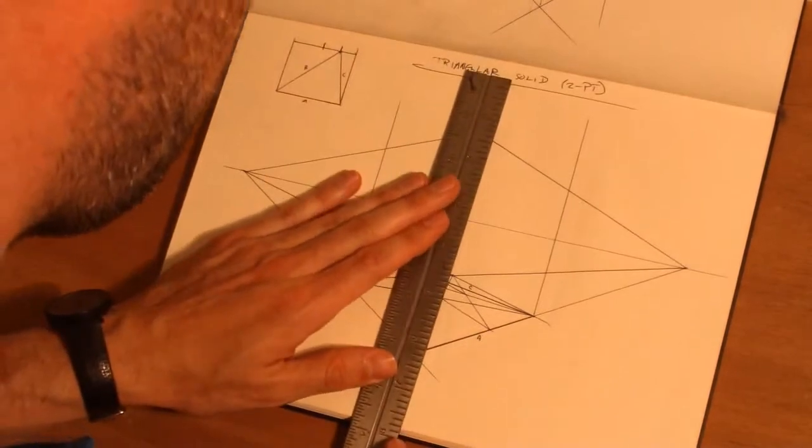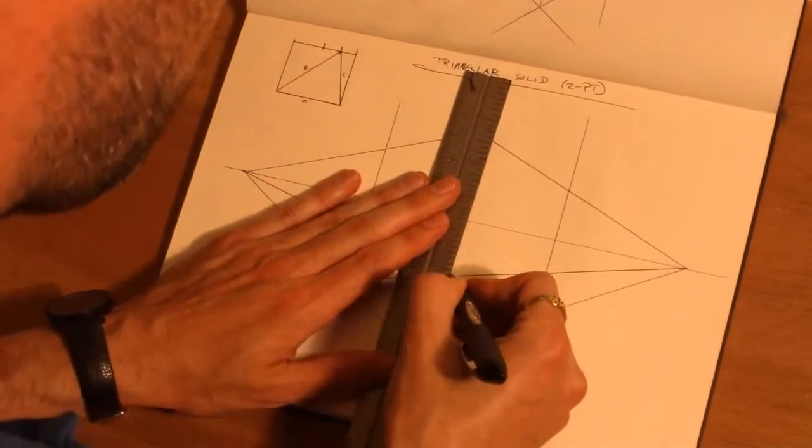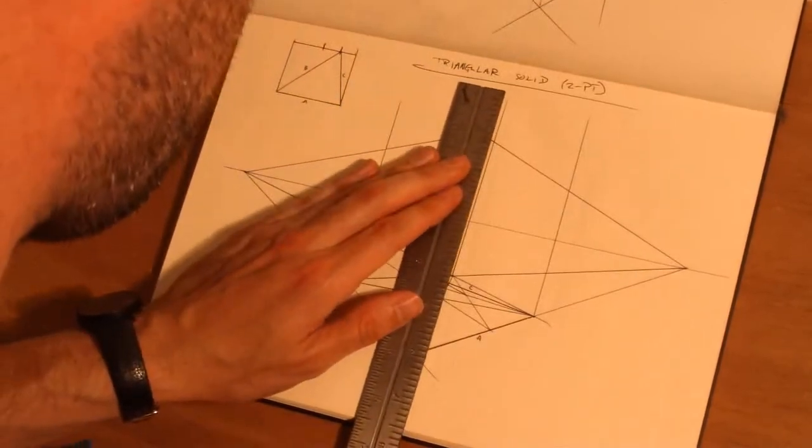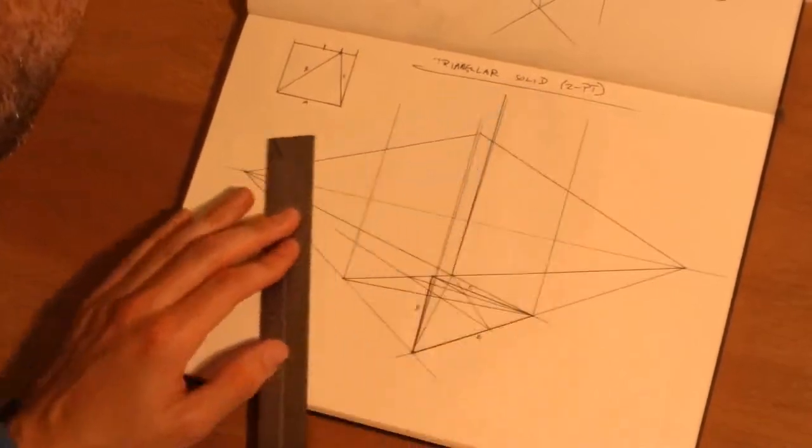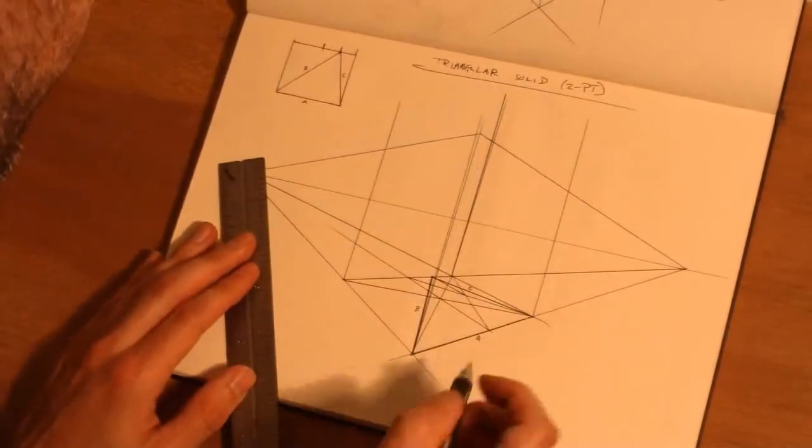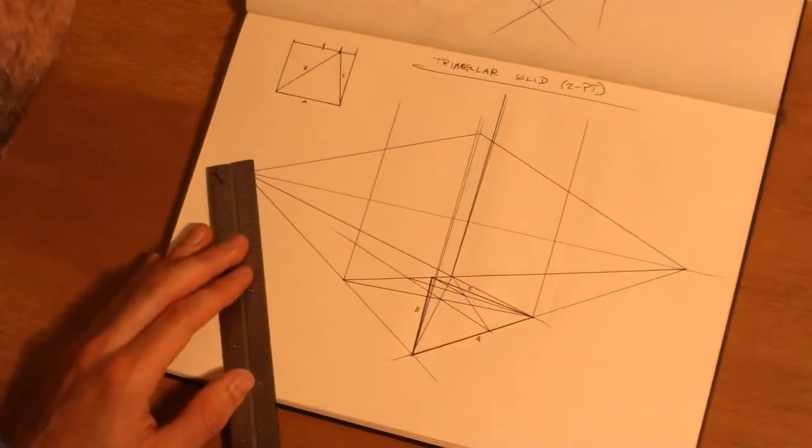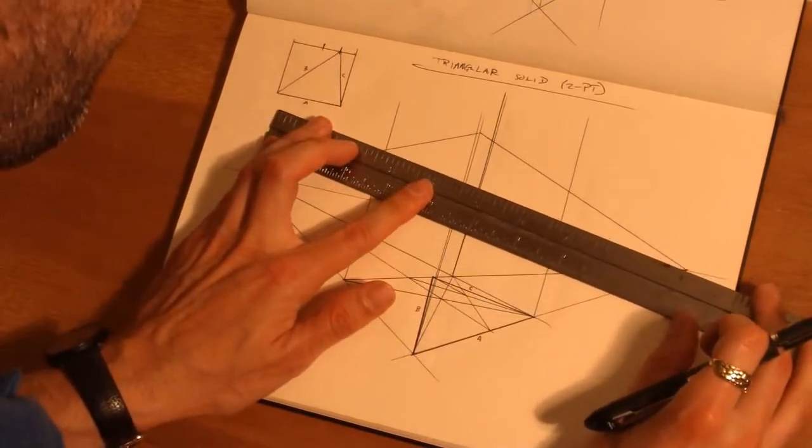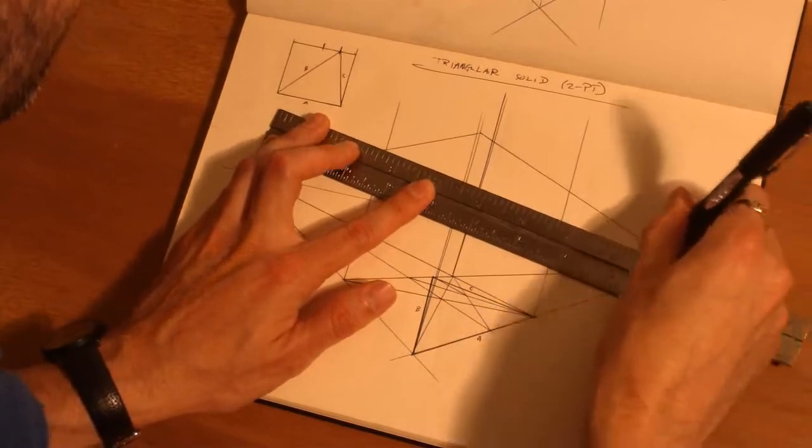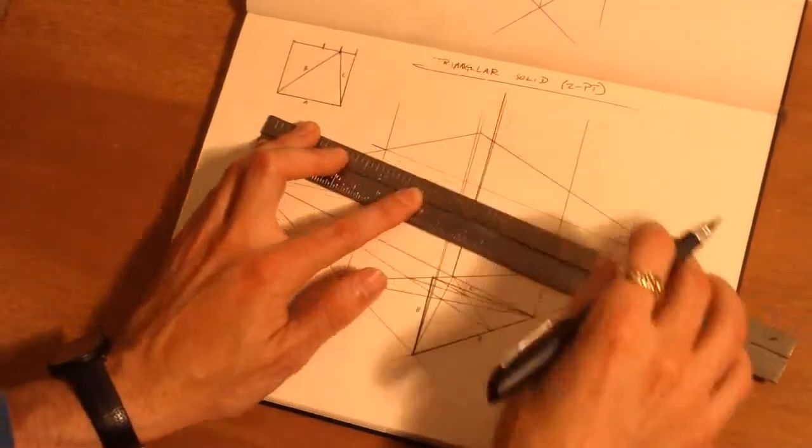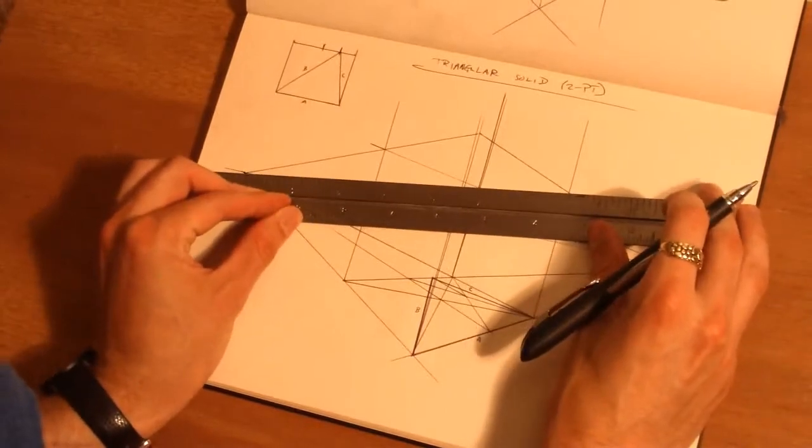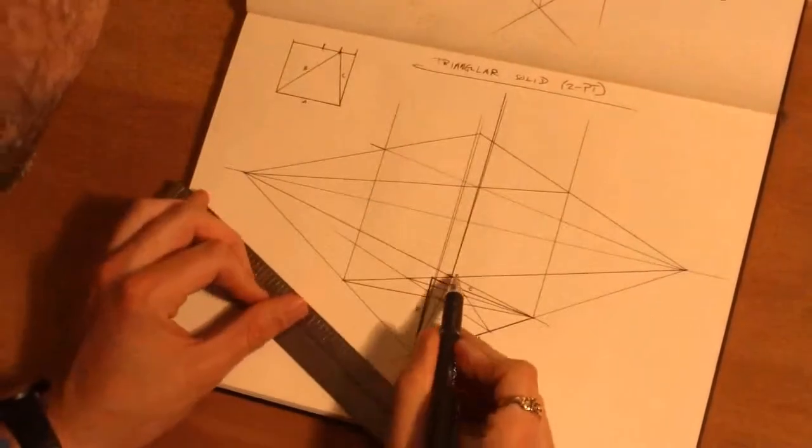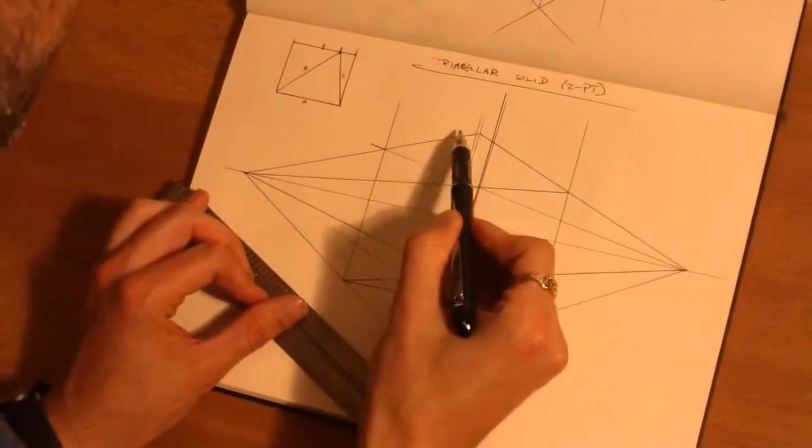We need to project the back upwards as well. That's better. So you can see our rectangle is starting to develop. Almost there. So now we have this plane projected up here up top.